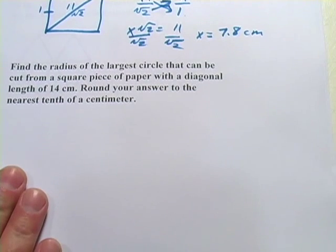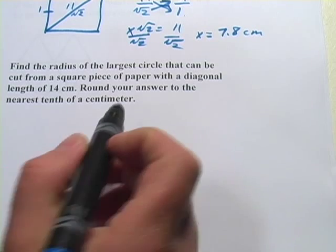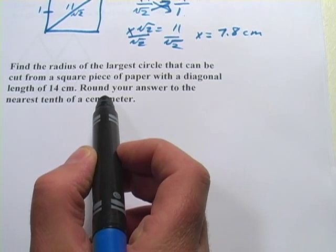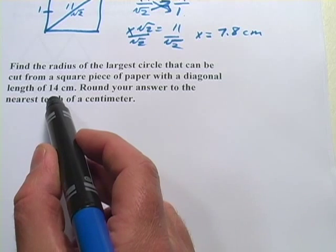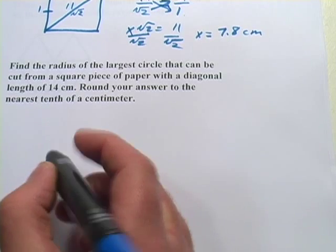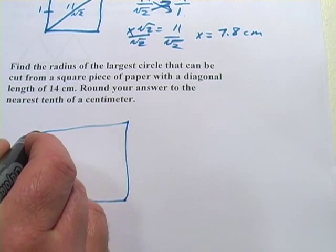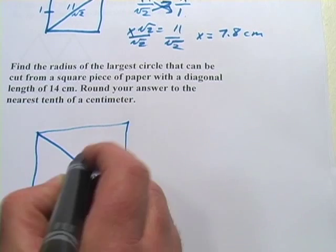Let's take a look at the next one. This one says find the radius of the largest circle that can be cut from a square piece of paper with a diagonal of 14 centimeters. Okay, so we've got a square piece of paper and it's got a diagonal of 14 centimeters.